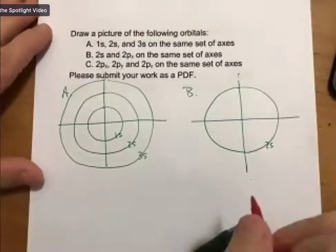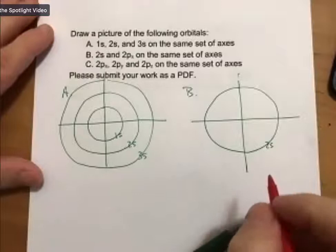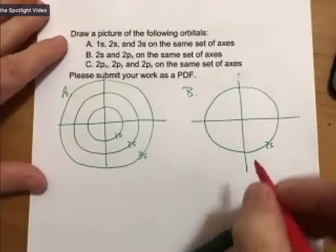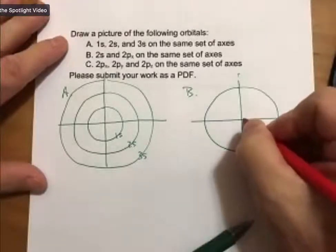Now again, this is something I don't think I covered. I don't think I covered the 2p shapes of the orbitals, but a 2p orbital looks like this. I'm going to draw it in red.